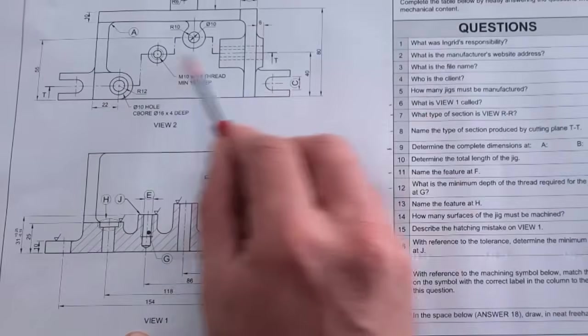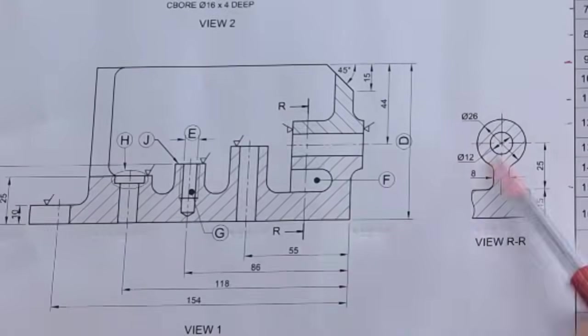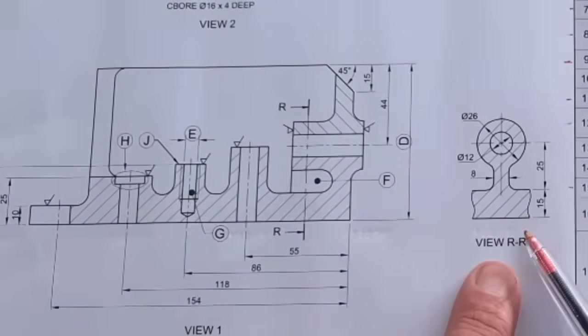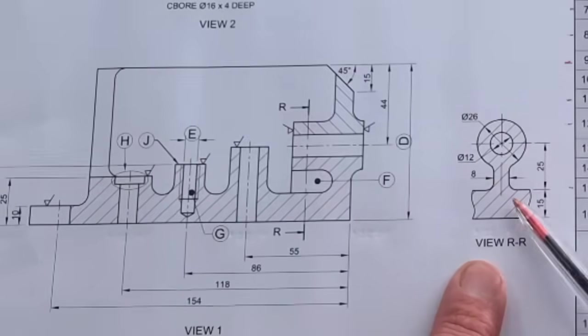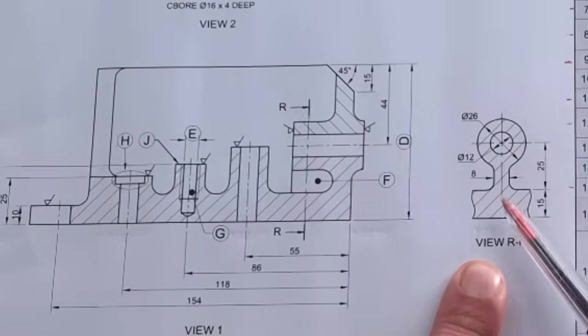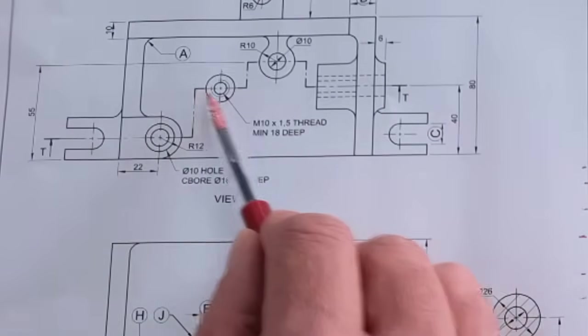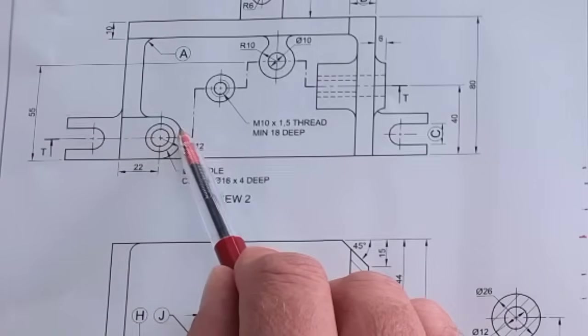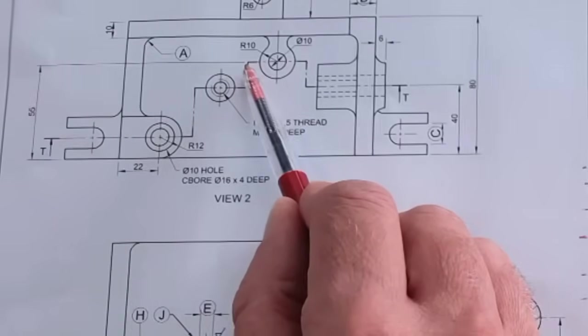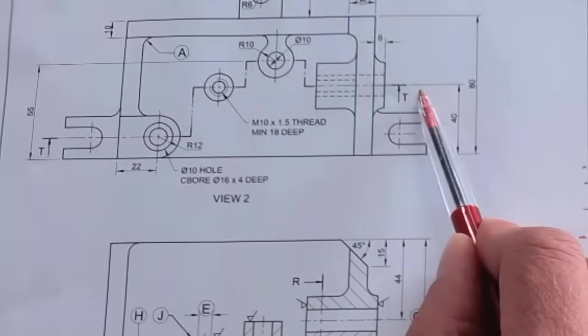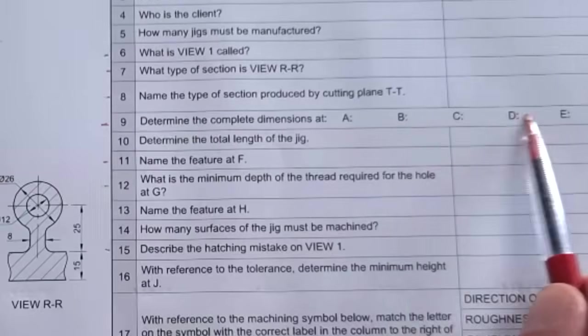Next question. What type of section is view RR? So it's removed from the main two views, and therefore it's called the removed view. Make sure there's a couple of others here - partial sections, etc., that you need to know. But they are in your workbooks. Then we're going on to the next one. Name the type of section produced by this cutting plane TT. Now you can see here that it follows a different path. It's not just a straight line. This is when we call it an offset or a multi-plane cutting plane: multi-plane or offset cutting plane.